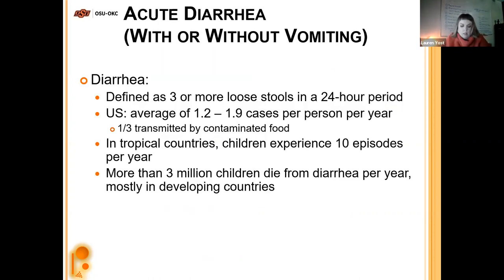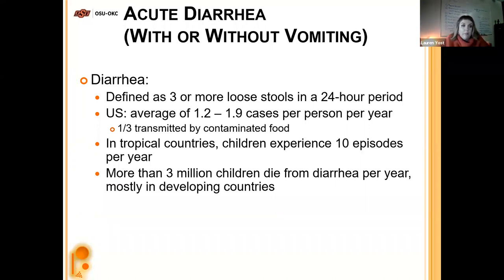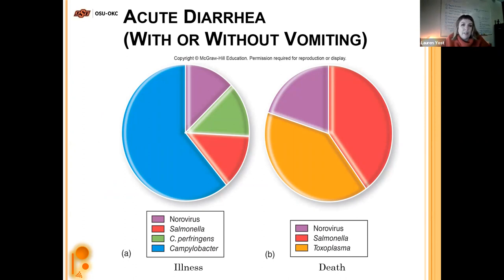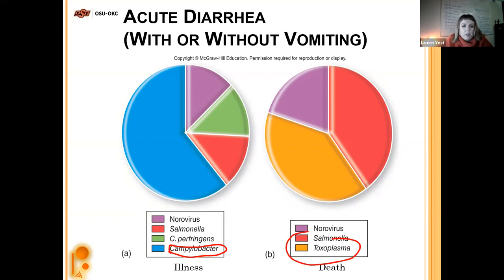Now let's talk about diarrhea with or without vomiting — acute diarrhea. Diarrhea is defined as three or more loose stools in a 24-hour period. The U.S. averages about 1.2 to 1.9 cases per person per year; about a third are transmitted by contaminated food. In tropical countries, children average 10 episodes per year, and more than 3 million children will die from diarrhea per year, most in developing countries. The most common cause of infectious diarrhea is Campylobacter. When discussing deadliness, we're talking most about Salmonella and Toxoplasma.